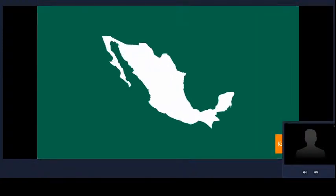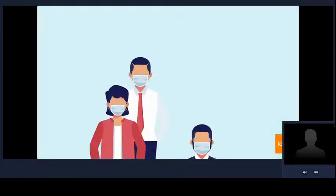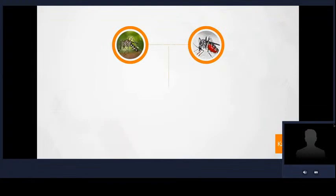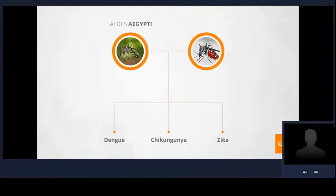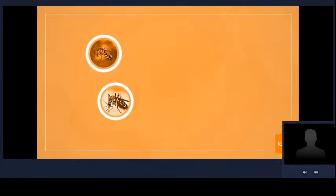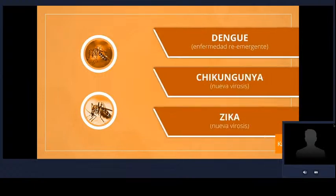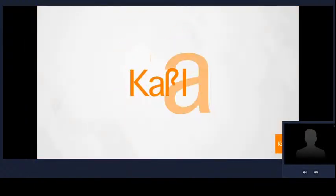En México, a partir de 2016, ha sido una preocupación de salud pública la reemergencia y aparición de enfermedades provocadas por tres diferentes virus transmitidos por los mosquitos Aedes aegypti y Aedes albopictus, responsables de brotes epidémicos: el dengue como enfermedad reemergente, y dos nuevas virosis: chikungunya y zika.